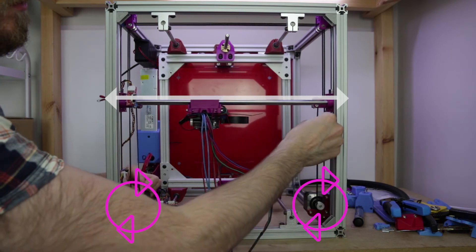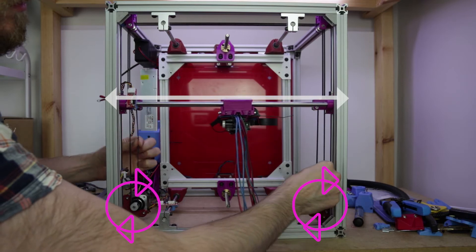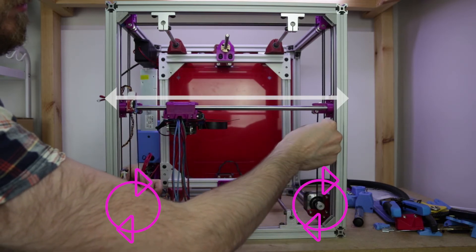Let's compare that to the CoreXY printer. If you move both motors in the same direction, it goes one way. You move them both in the other direction, it goes the other way.